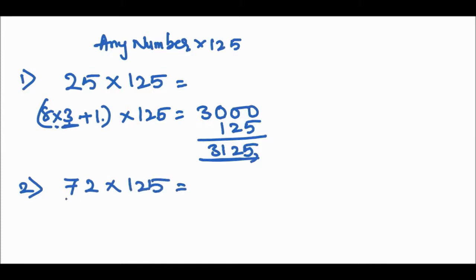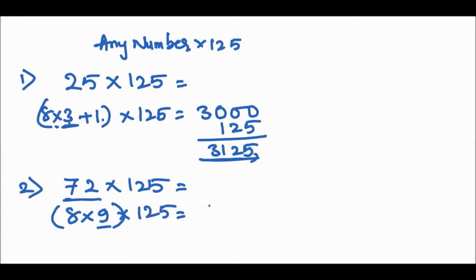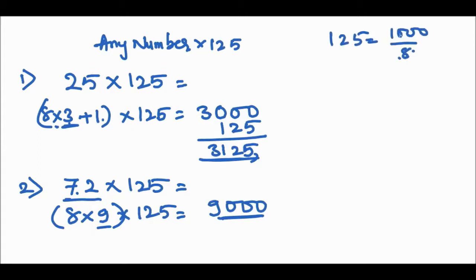Second example: 72 into 125. We write 72 as 8 × 9. The answer is 9000 — three zeros come from 125 = 1000 ÷ 8. So 8 × 9 = 72, then add three zeros: 9000.